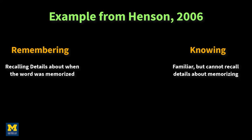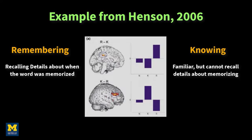Henson and colleagues found significantly greater activation in the posterior cingulate for remembered words but not known words, and greater activity in the lateral prefrontal cortex for known words compared to remembered words, along with a significant region-by-condition interaction. As a control condition, new words were also presented, which showed no significant activity in either region.